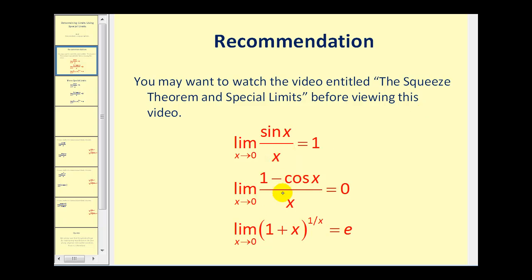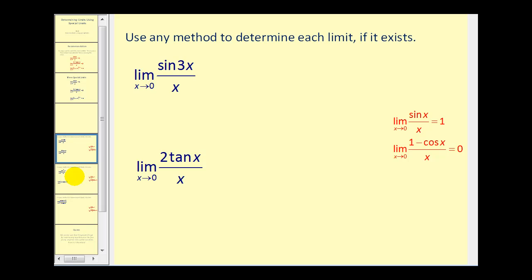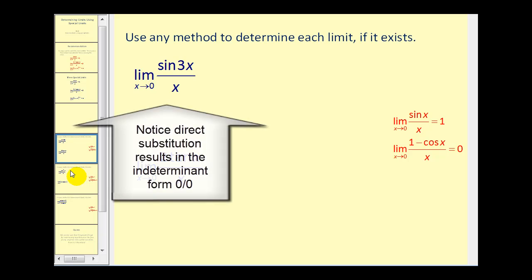This video will go over several examples using these first two special limits to determine other limits. Let's take a look at these limits here. The limit as x approaches zero of sin(3x) divided by x looks very similar to this special limit here, except now the angle is 3x instead of just x. If we manipulate this, then we can use this special limit to determine this limit.